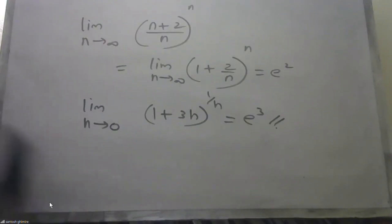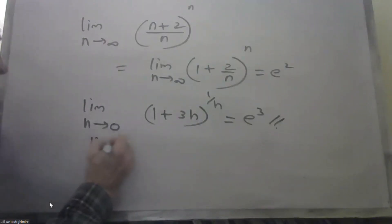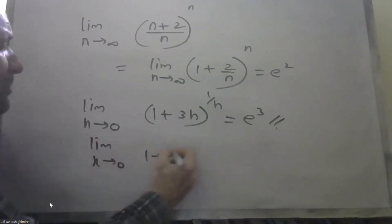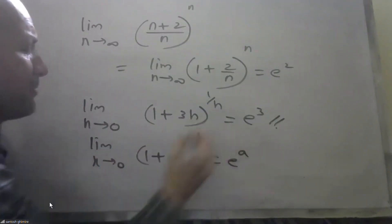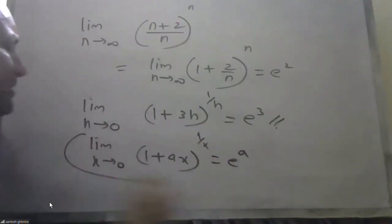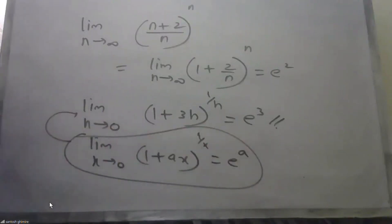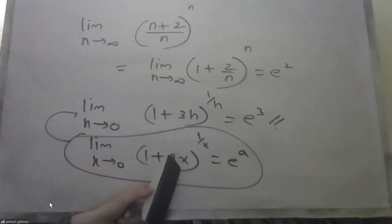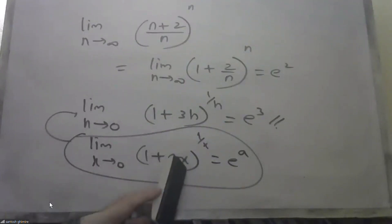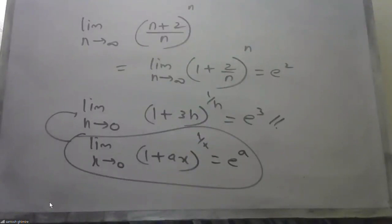The general form is: limit as x approaches 0 of (1 + ax)^(1/x) equals e^a. We have the case of 0 and the case of infinity as the two standard forms. Basically, the limit reduces directly to the definition of e.